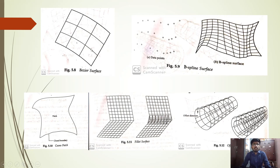The Bezier surface is usually represented using global coordinates, whereas the Bezier surface extended to a B-spline surface uses local coordinates as well. Next is the Coons surface.